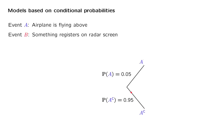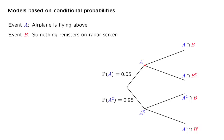Now we also have a radar that looks up there, and there are two things that can happen: either something registers on the radar screen, or nothing registers. If there's a plane up there, it's possible that the radar will detect it, in which case event B will also happen. But it's also conceivable that the radar will not detect it, in which case we have a so-called miss. Another possibility is that nothing is flying up there but the radar does detect something — this is called a false alarm.